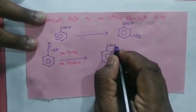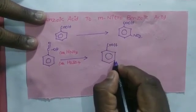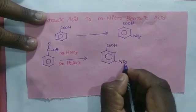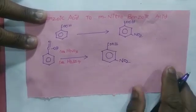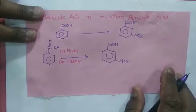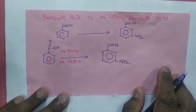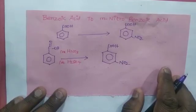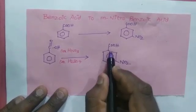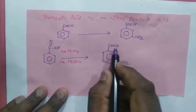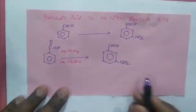In meta-nitrobenzoic acid, the COOH group is present and the nitro group is substituted at the meta position, because the carboxylic acid functional group is a meta-directing group.